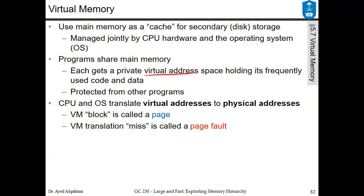The CPU and operating system must translate the virtual addresses seen by the hard disk or hard drive to physical addresses, which is the address the main memory expects. The virtual memory block is called a page, and a virtual memory translation miss is called a page fault. If there is a page that is not in the memory and only exists on the hard drive, this means we have a page fault.